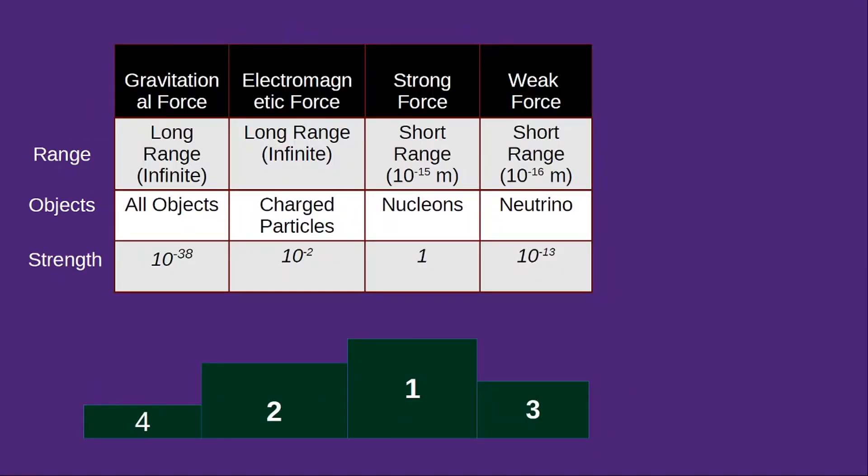Now we compare these four forces based on the range, objects and strength. The gravitational and the electromagnetic force are the long range forces. Whereas the strong and the weak forces are the short range. The objects affected by the gravitational force are all objects in this universe. For electromagnetic force it is only the charged particles. For strong force it is only the nucleons, which is the proton and the neutrons. And for weak force it is the neutrino, or also you can say an anti-neutrino.